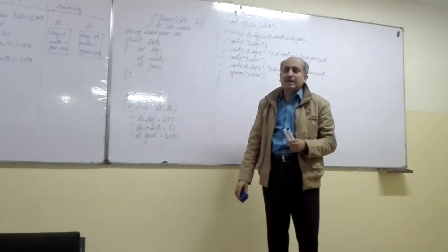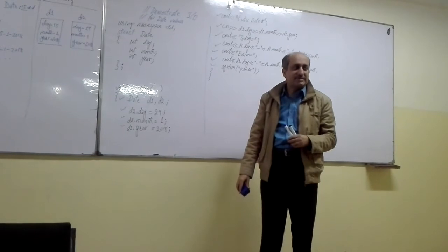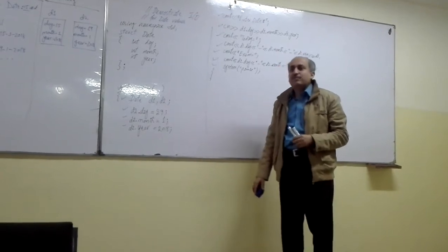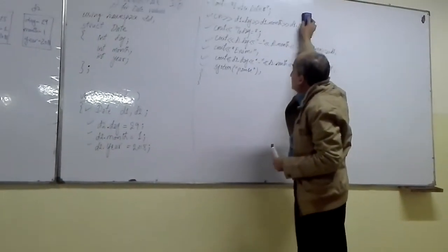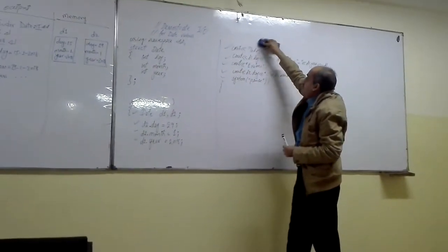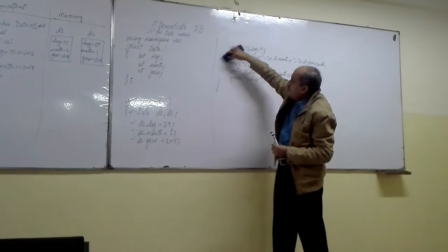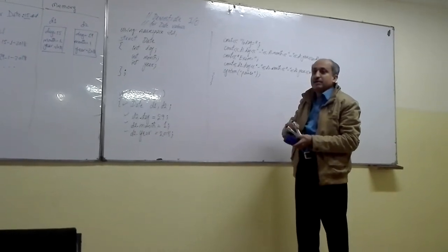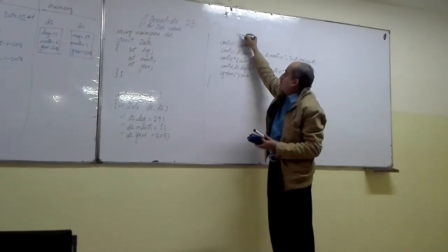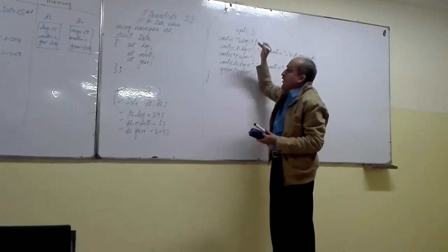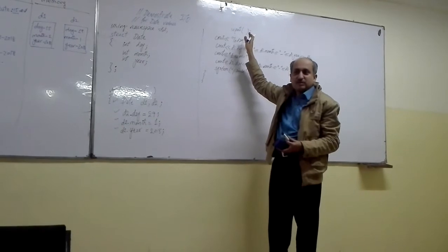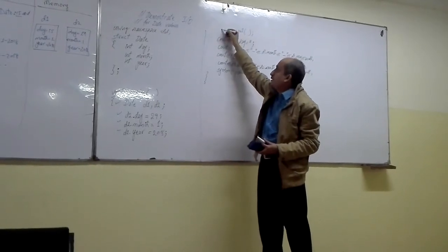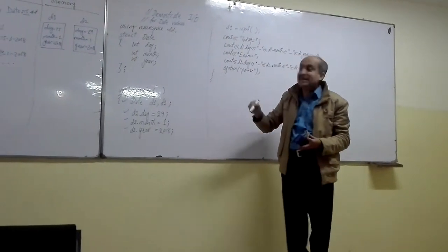Now we want to organize our code in separate functions. In order to improve our code, we should be writing input and output functions. This input code will be shifted into a separate function, and over here we shall write the call for that input function. It is the responsibility of the input function to get the date value from the user and return that date value into the main program so that it could be assigned to a date type variable D1.